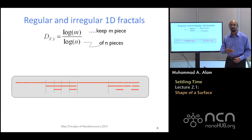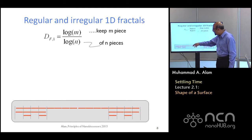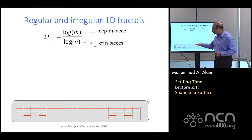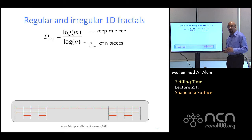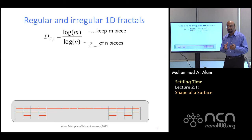These two examples we'll call regular fractals, where you're following the same rule over and over again. But you could also follow a random rule — in the first iteration throw away the middle two, in the next iteration throw away the first and third, and keep mixing up the rules. So long as you keep the same number of pieces thrown out of the total, these surfaces will be called random fractals, while the former two are called regular fractals. Fractal surfaces need not be unique; they can be either regular or irregular.